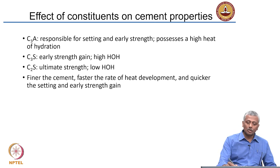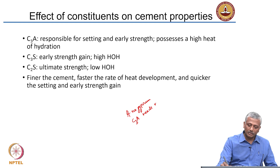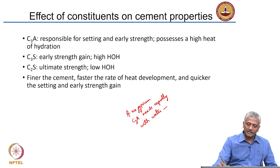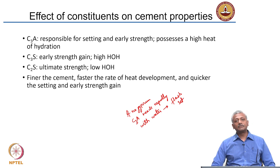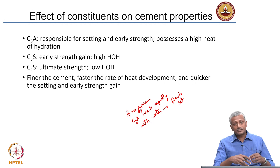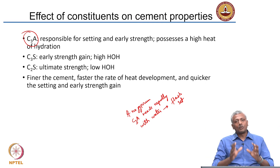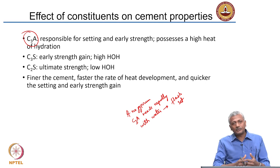In cement, if there is no gypsum, the C3A reacts rapidly with water with a lot of heat evolution and leads to what we call flash set — the cement will suddenly harden and it will not be recoverable beyond that. That is why we add gypsum to take care of C3A; without gypsum, it would react uncontrollably. So gypsum is there to regulate the rate at which C3A reacts.